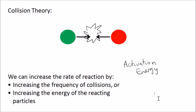So there are two ways that we can increase the rate of reaction. We can either increase the frequency of collisions — so more collisions — or we can increase the energy of the reacting particles. If we do either of these two things, or both, we can increase the rate of reaction.